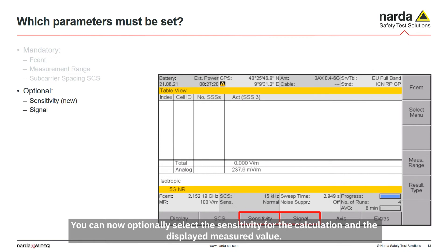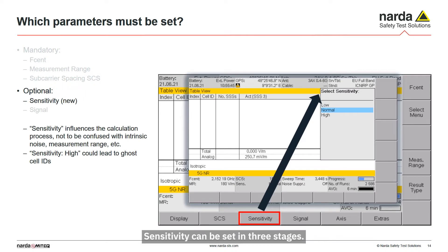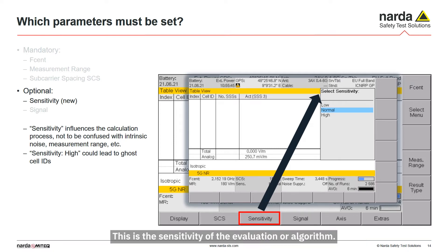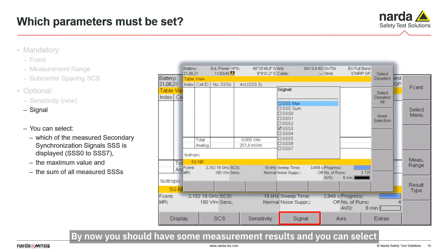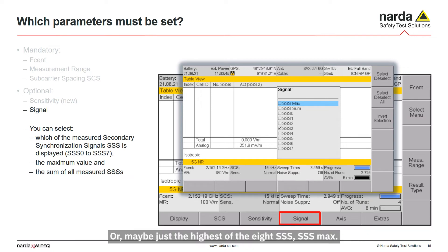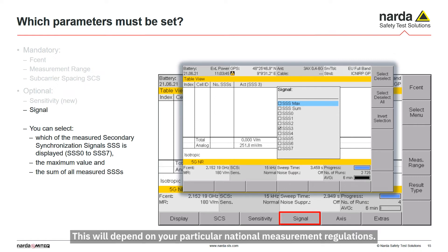You can optionally select the sensitivity for the calculation and the displayed measured value. Sensitivity can be set in three stages — this is not the physical measurement sensitivity of the instrument such as displayed intrinsic noise, but rather the sensitivity of the evaluation algorithm. You can then select which of the eight possible secondary synchronization signals, SSS, you want to display: perhaps just the highest of the eight SSS values (SSS max), or the sum of the squares of all eight SSS signals (SSS sum). The choice depends on your particular national measurement regulation, but the SRM always measures all eight at the same time.